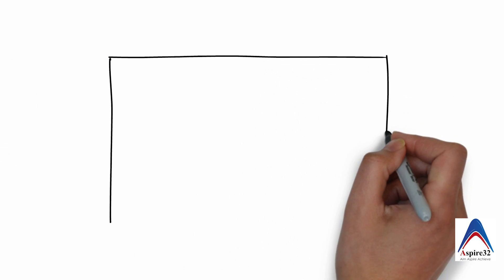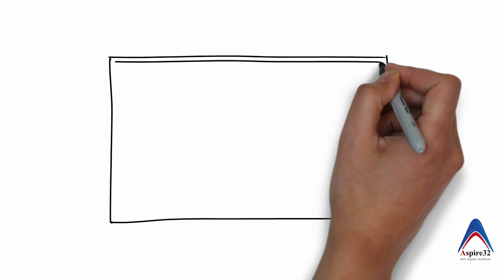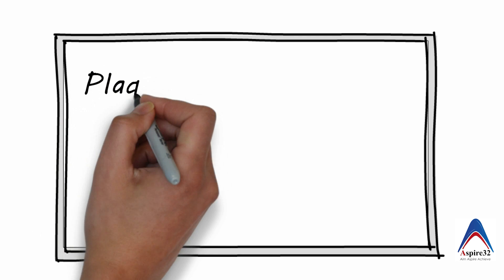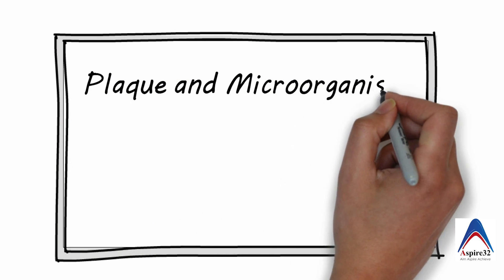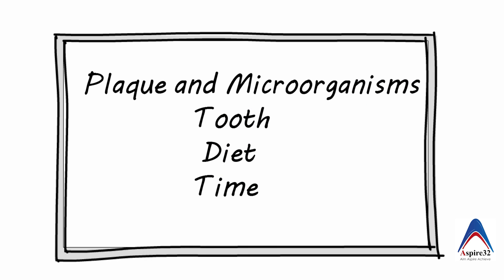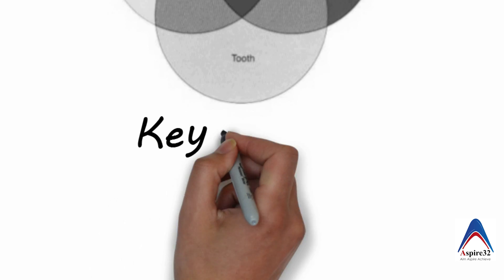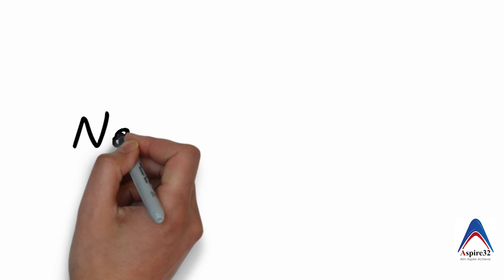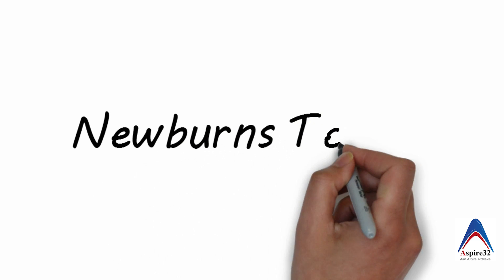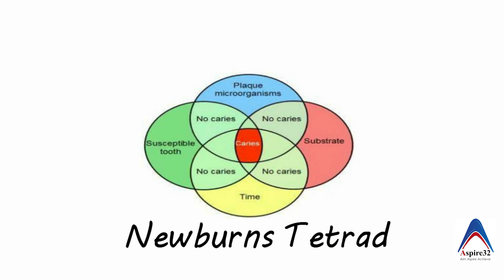Caries is a multifactorial disease. However, it requires four factors in order to form: the plaque and microorganisms, the tooth, the diet, and time — all four essential for caries formation. The three factors together constitute the Keyes triad, to which time was added later and it was termed as Newbrun's tetrad. As you can see in the image, without all the factors, caries won't initiate or even progress.